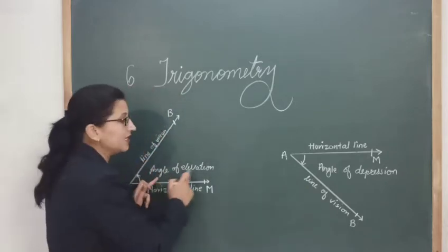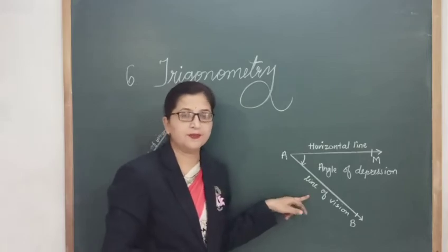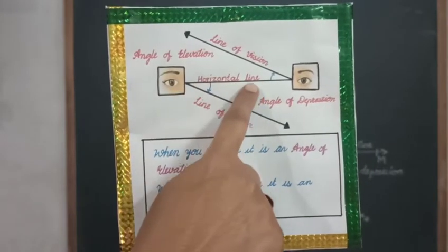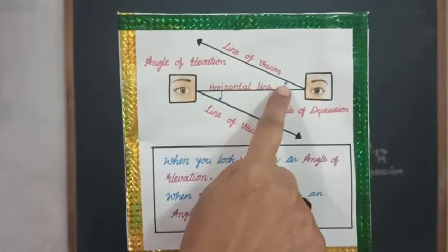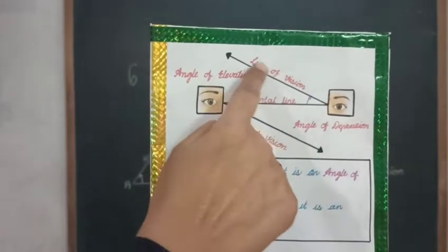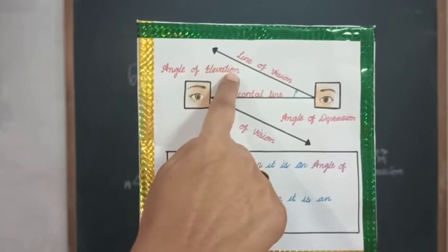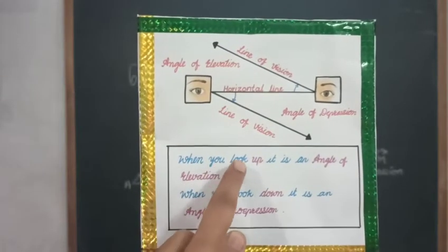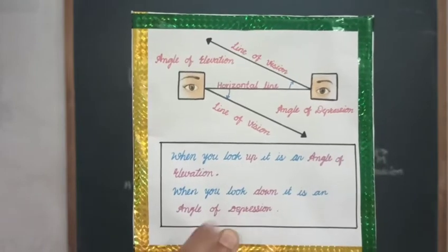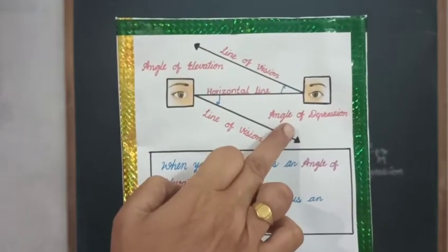So, the angle of elevation forms when the person looks upward, and the angle of depression forms when the person looks downward. Keep in mind: these angles are always formed between the horizontal line and the line of vision. When the person is looking downward, the angle between the horizontal line and line of vision is the angle of depression; when looking upward, it is the angle of elevation. I hope that is clear.